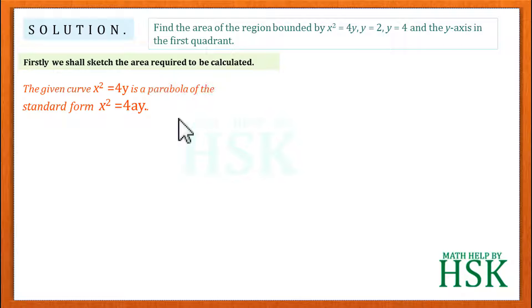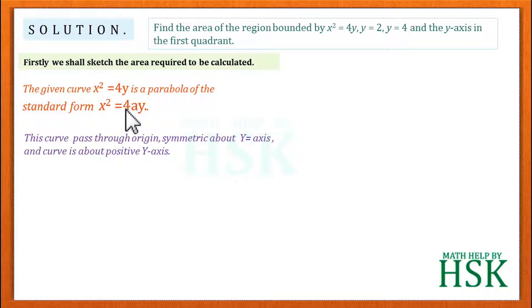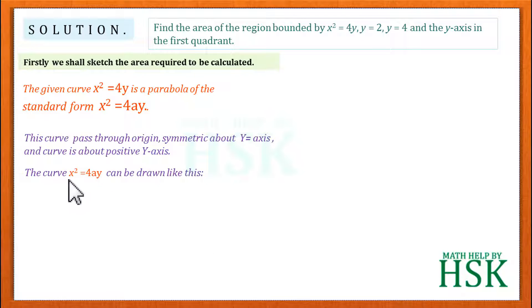To solve the question, first we shall sketch the area required to be calculated. The given curve x² = 4y is a parabola whose standard form is x² = 4y. It passes through the origin because it contains no constant term, and it is symmetric about the y-axis because it contains a term of x².